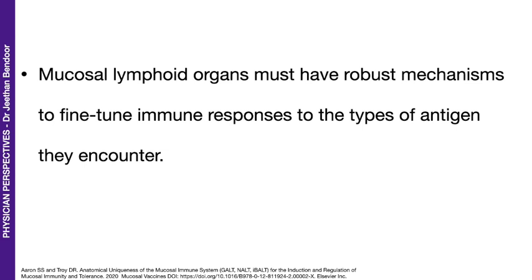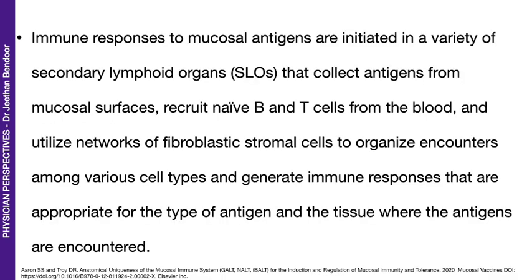Therefore, it is so important for the mucosal lymphoid organs to have robust mechanisms to fine-tune immune responses to the types of antigens they encounter. An antigen is any substance that causes the body to make an immune response against that substance — it could be a protein in a virus, a bacteria, or a particle you breathe in. The body then takes up that information and mounts an immune response.